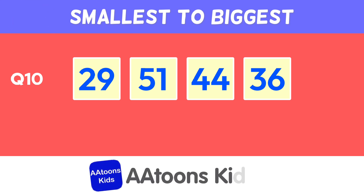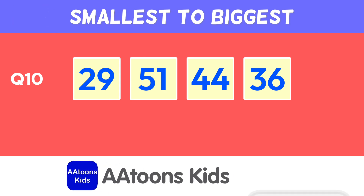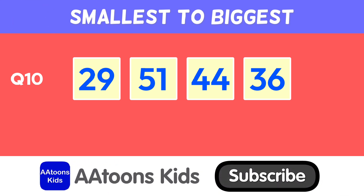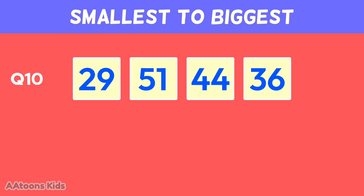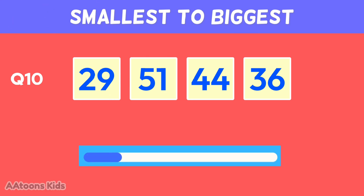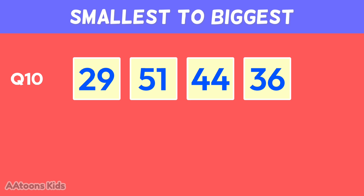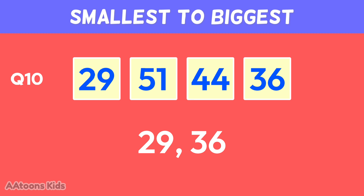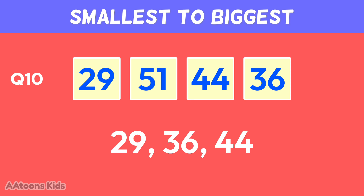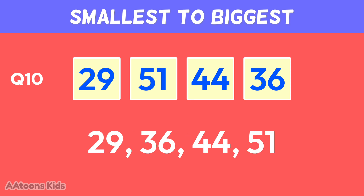Arrange these numbers from smallest to biggest: twenty-one, thirty-six, forty-four, fifty-one.